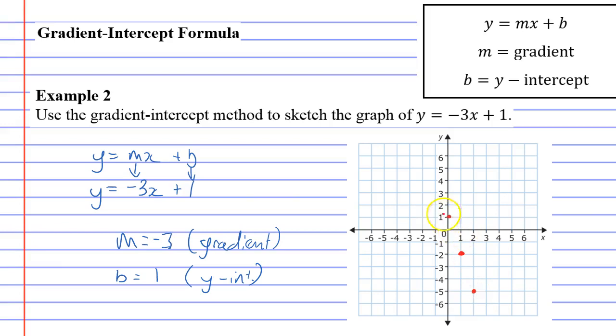And if you were to go in reverse, because we're supposed to be going across 1, down 3, if we go back 1 we'd go up 3. Back 1, up 3.